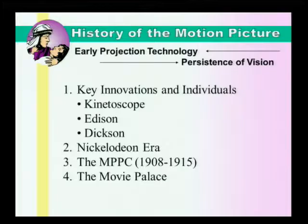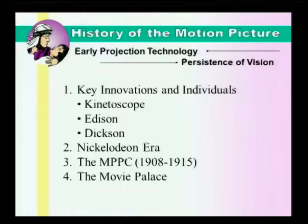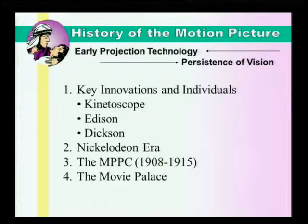Also, the history of the motion picture. Be sure to recognize the early projection technology and understand the theory of persistence of vision — the notion of how movies began to move. You can take sequential still frames, as in photography, that advance a movement, and when they are run through a projection system, they give you the illusion of movement. In the silent era, that ran anywhere from 16 to 18 frames per second, but in the sound era it was standardized to 24 frames per second.